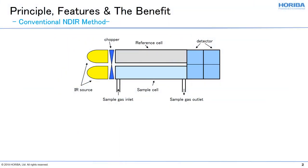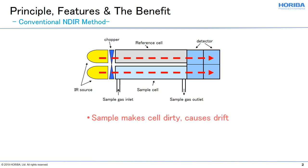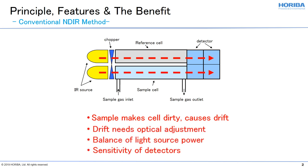This is a conventional NDIR method. Basically, it has two light sources, a sample cell and a reference cell with two detectors. The two detectors read differences of absorption of light between the reference cell and sample cell. The weak point for this method is that dirty sample gas is continuously introduced into the sample cell, causing drift and requiring optical adjustment. Also, the balance of light source power and sensitivity of the detectors is crucial for accurate measurement.